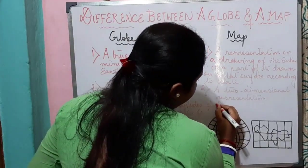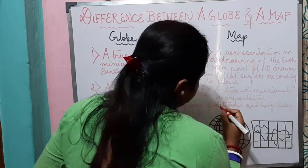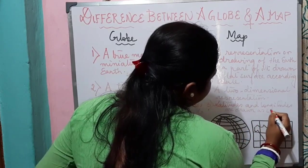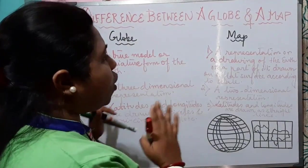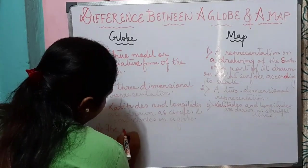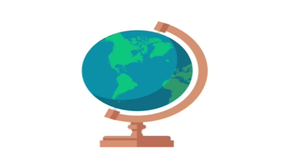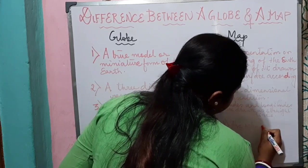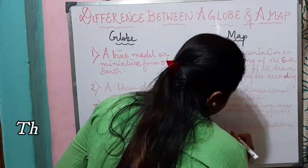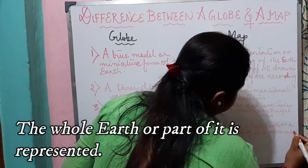On a map, the latitudes and longitudes are drawn as straight lines. Now, on a globe the whole surface of the Earth is represented, whereas on a map the whole Earth or a part of it is represented.